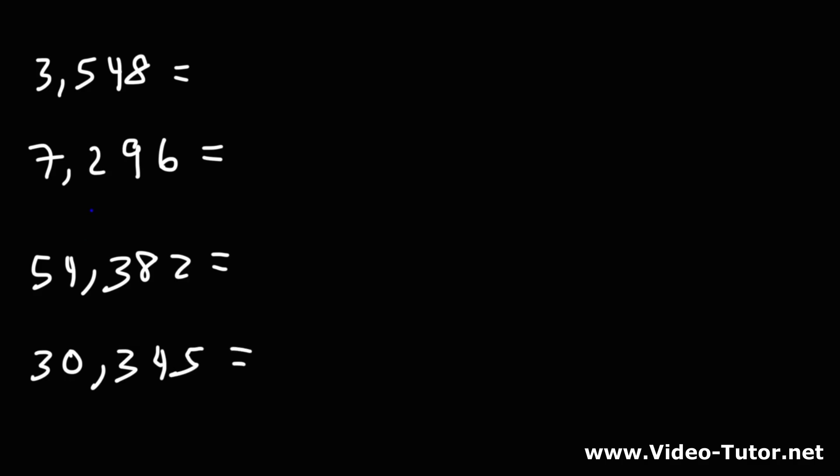So starting with the 3, that's in the thousands place, that has a value of 3,000. The 5 is in the hundreds place, so that has a value of 500. The 4 is in a tens place, so that has a value of 40. And then the last digit is 8.